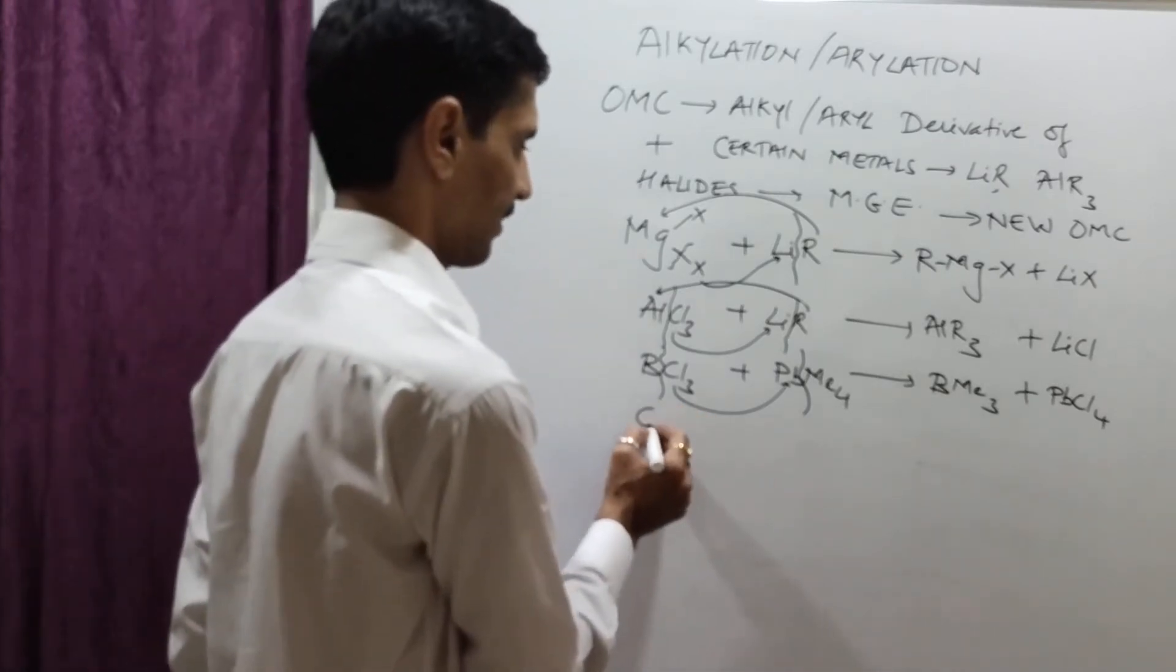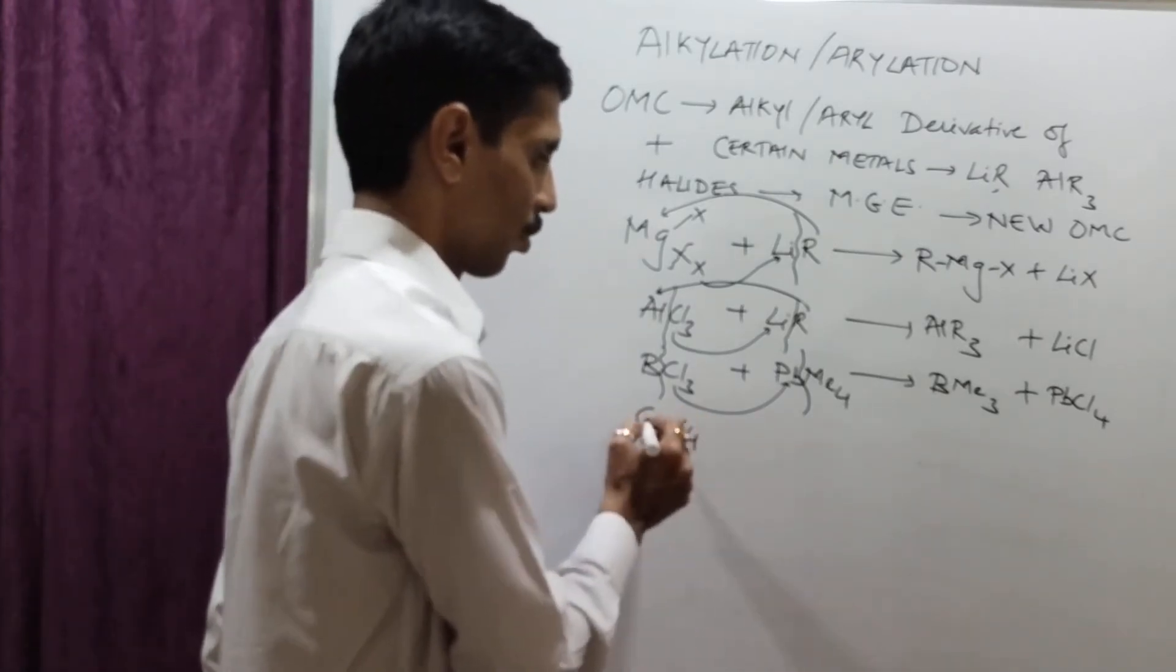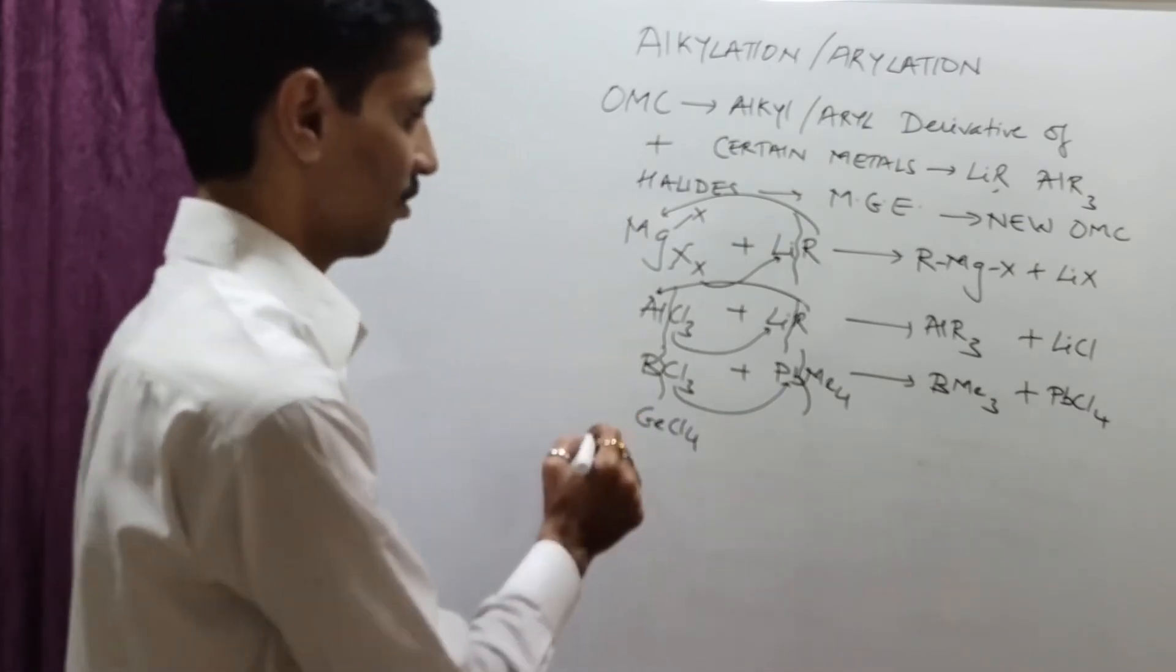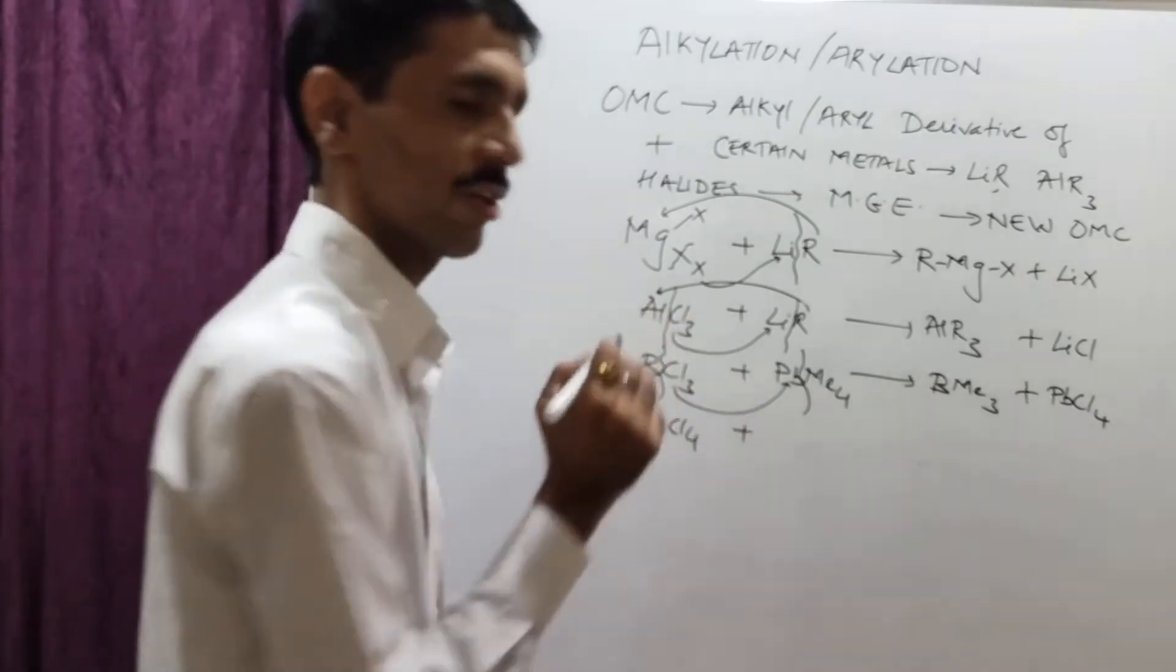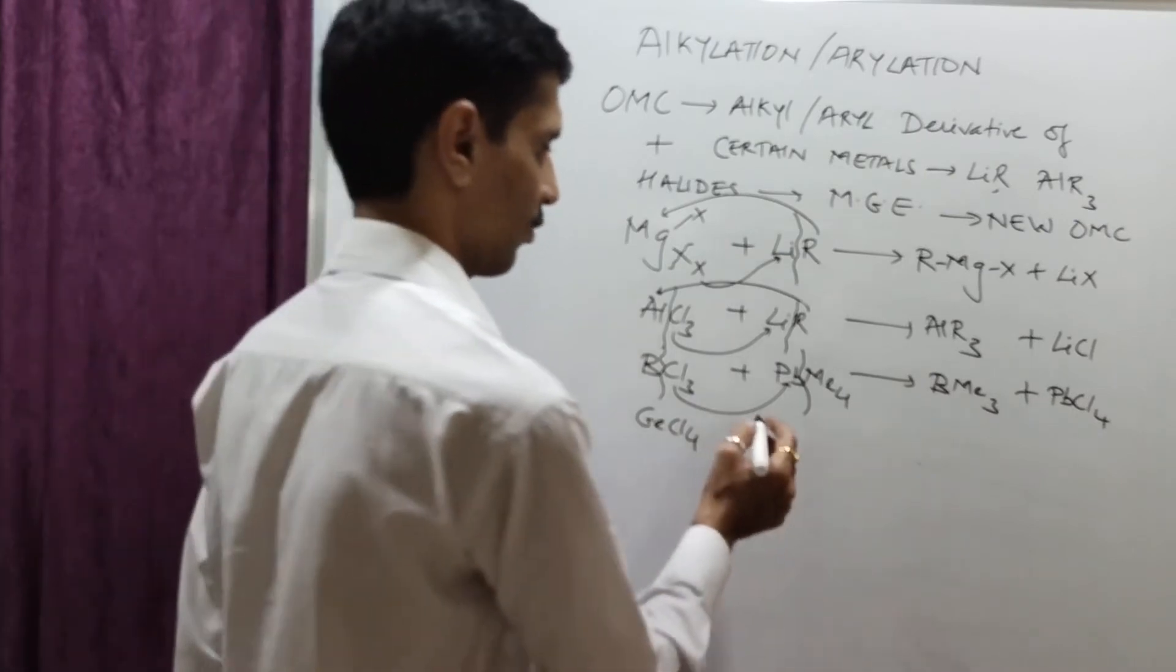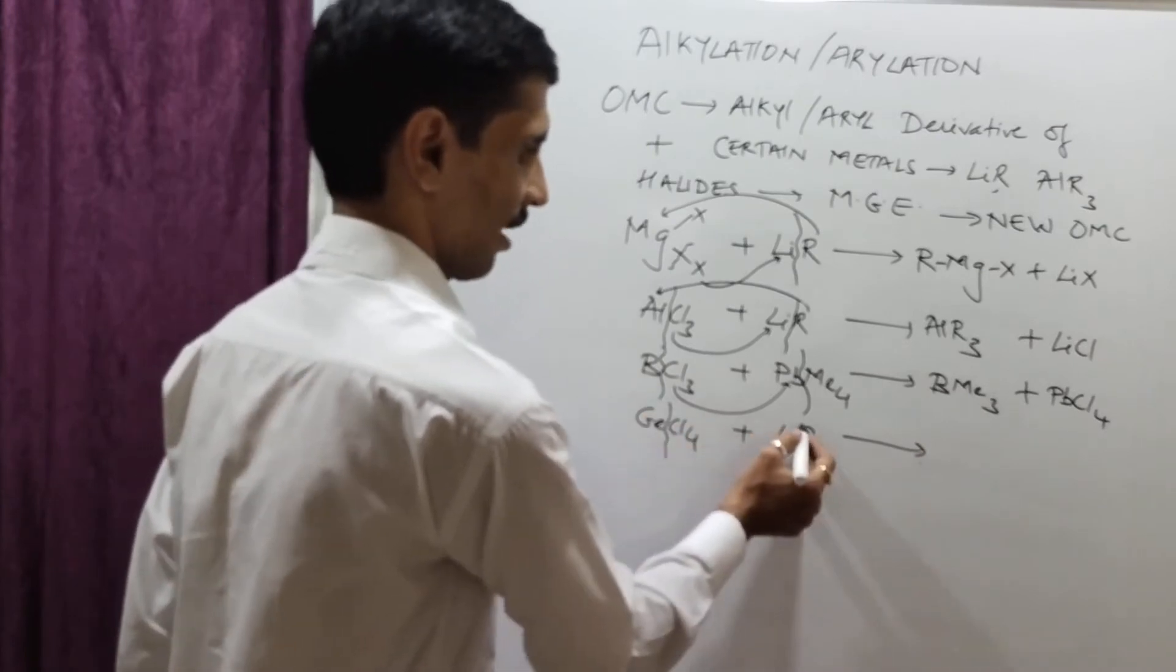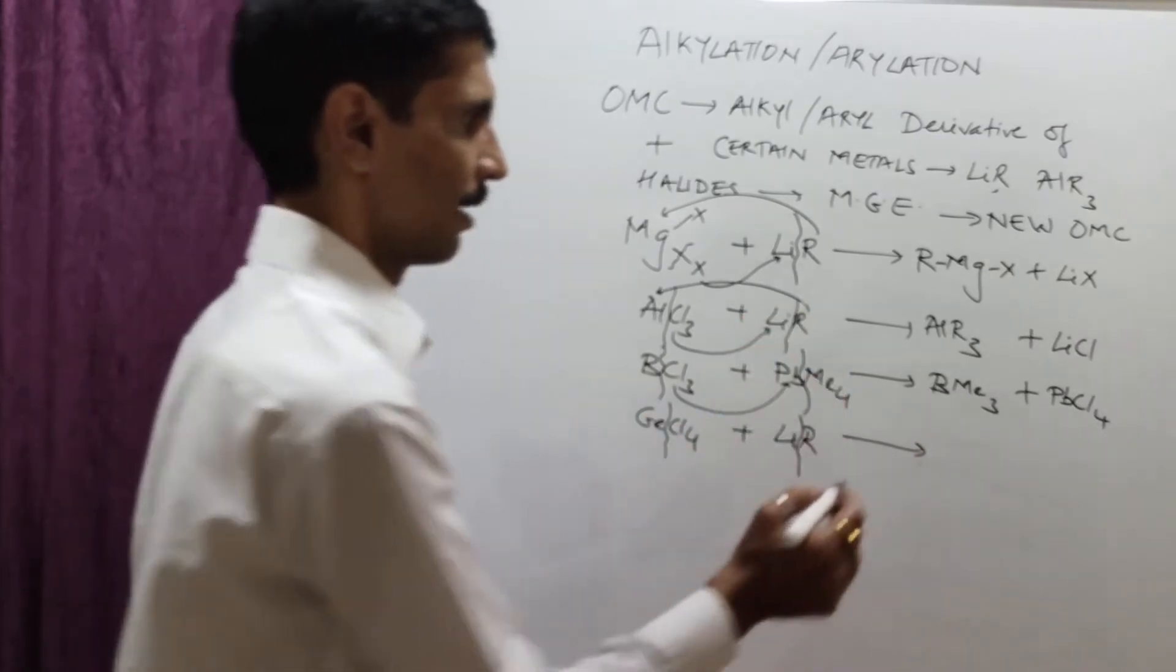Some more examples. I'll take an example of group 14, germanium. So, GeCl4. I am going to treat this GeCl4 with LiR. It's a complete bond breaking process taking place. So, now, you guessed it right. What the products are going to be. So, here you get LiCl.